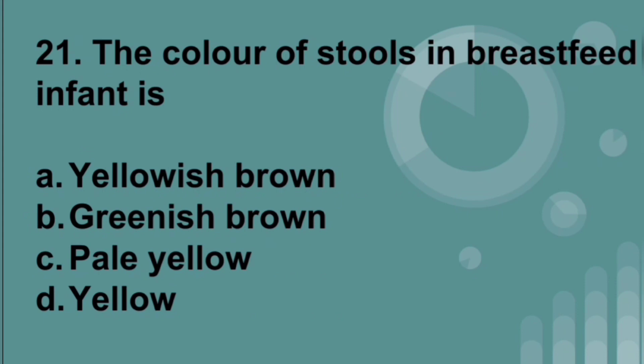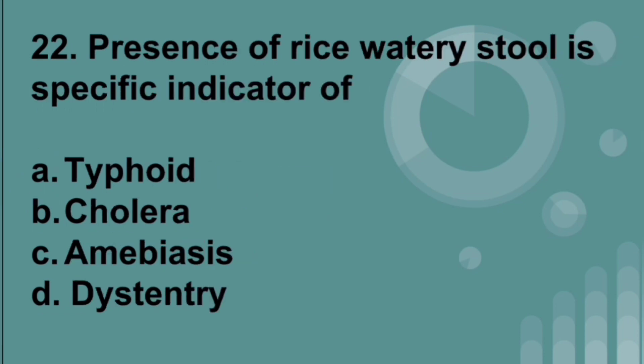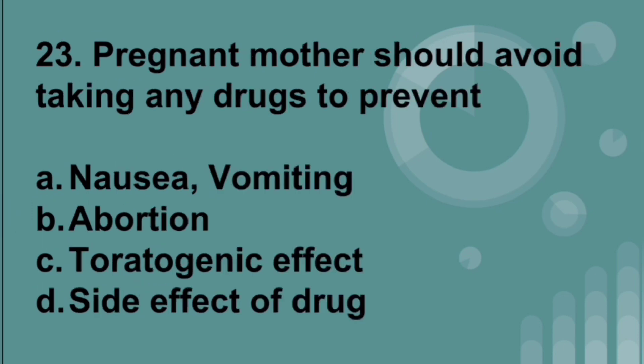The color of stool in breastfeeding babies is yellowish brown, also called mustard brown. The presence of rice-watery stool is a specific indicator of cholera. A pregnant mother should avoid taking any drugs to prevent teratogenic effects, which may cause abnormality in the fetus.